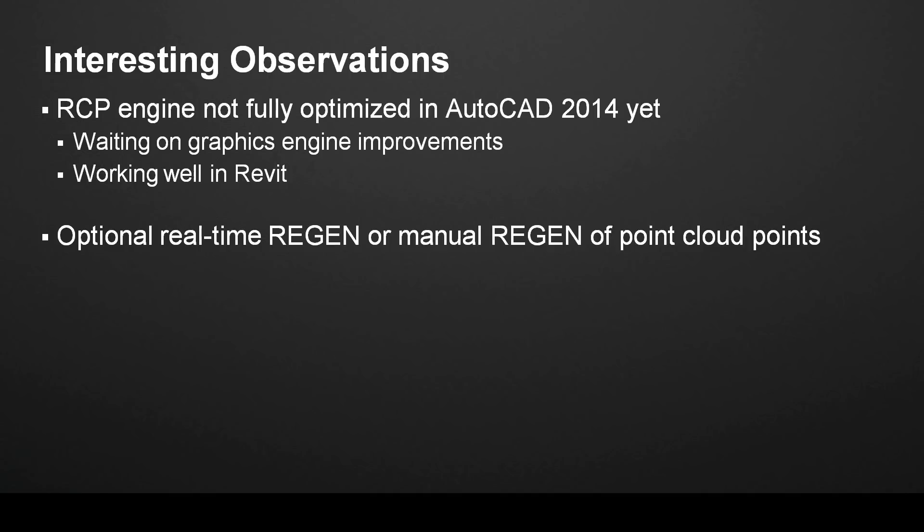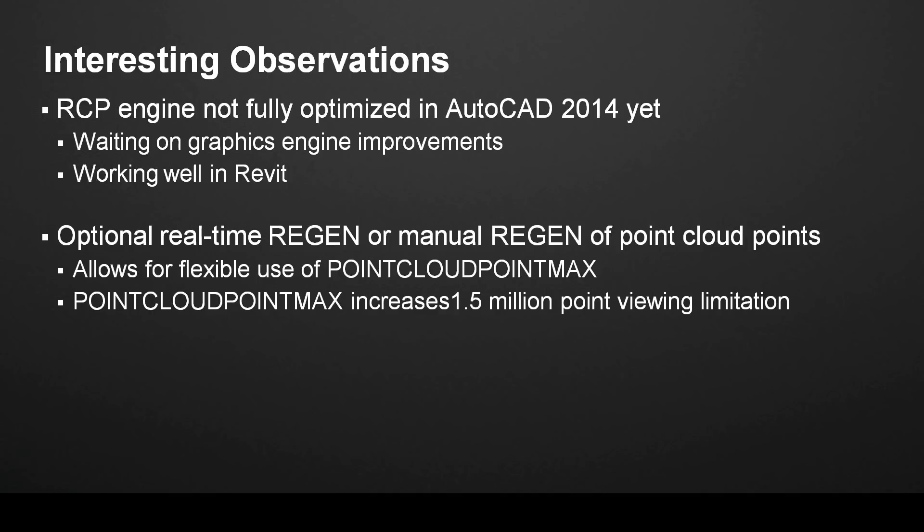At this time, there's an optional real-time regen or manual regen of the point cloud points, and I'm going to show this live. This will allow for some flexibility in the use of the point cloud point max option. For users on 2013, you may be familiar with point cloud point max — it allows you to increase the 1.5 million point viewing limitation that AutoCAD had in 2011 and 2012. The PCG engine handles up to 2 billion points, but would only show 1.5 million at a time so that AutoCAD could handle it graphically. Using point cloud point max, you can turn that threshold up as high as 10 million points.